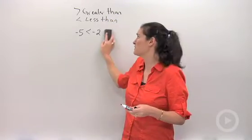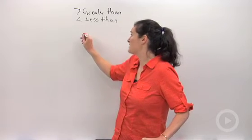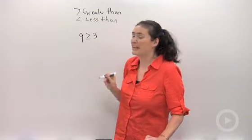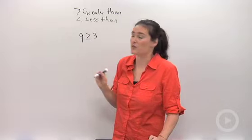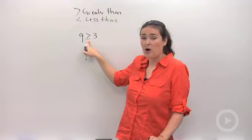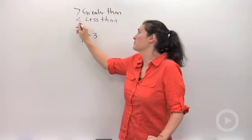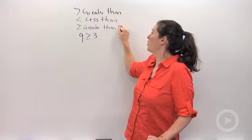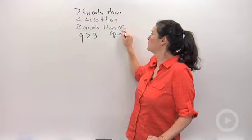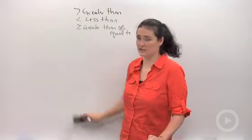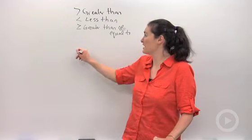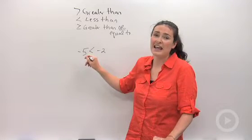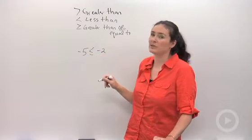Here's where it starts to get a little bit confusing. I could say nine is greater than three, or I could say nine is greater than or equal to three. When I add that little dashy on the bottom, what that means is greater than or equal to. Same thing, instead of negative five is less than negative two, I could also write negative five is less than or equal to negative two.